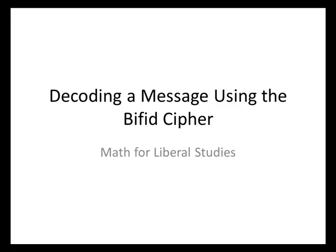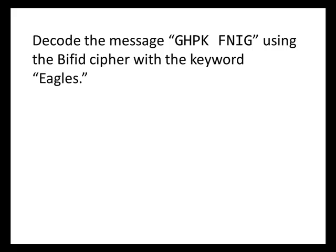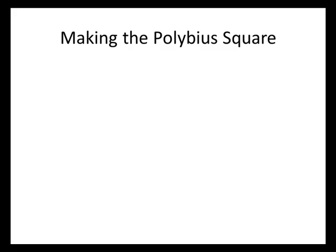In this video, we'll be learning to decode a message using the bifid cipher. Here's a typical problem. Decode the message g-h-p-k-f-n-i-g using the bifid cipher with the keyword eagles. Here's how this will work. The first step will be to make what's called the polybius square.